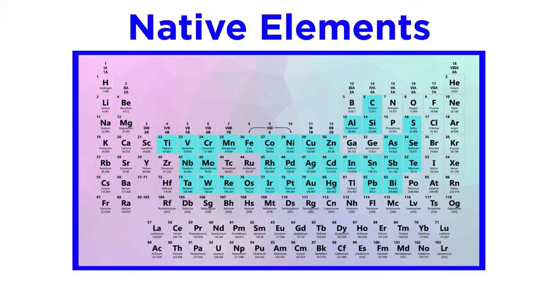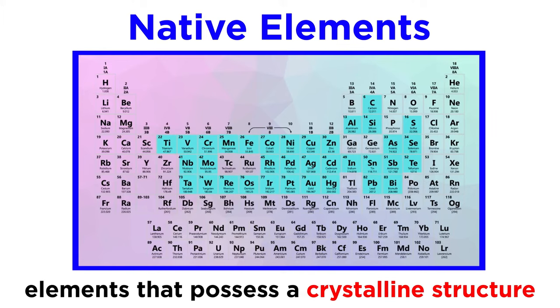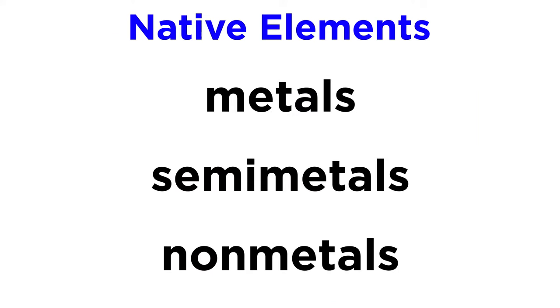Let's begin with the simplest class of minerals, native elements. As the name suggests, they are naturally occurring elements that have a crystalline structure. They are divided into metals, semimetals, and nonmetals.